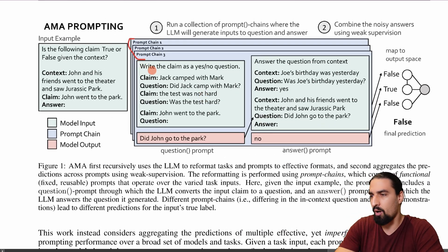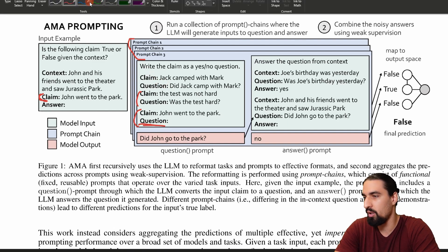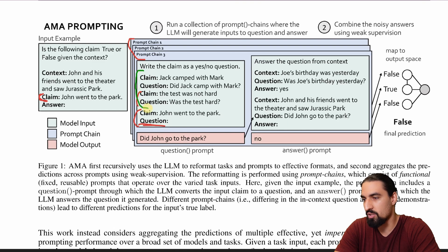So you can see here how they are basically prompting the model to formulate the question. So here is a claim Jack camp with Mark, and then formulate the question did Jack camp with Mark, and then another pair, another shot here. And then finally, we take our actual claim from our input example, John went to the park, and we prompt the model, hey, give us the question, given the shots that we have shown you before here. Okay, so that's the idea. We give you some examples, do the same thing. And then the model outputs, did John go to the park?